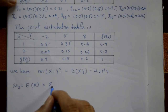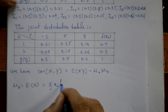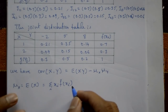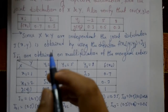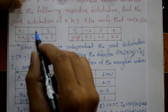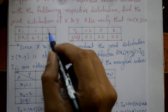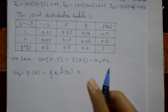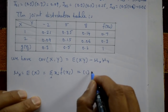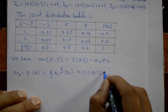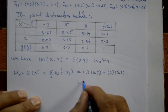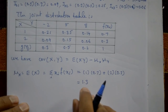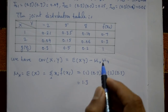Now we verify that covariance of X and Y equals 0. First, compute mu of X, which is the expectation of X: summation of xi × f(xi) = 1 × 0.7 + 2 × 0.3 = 0.7 + 0.6 = 1.3.